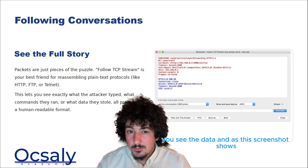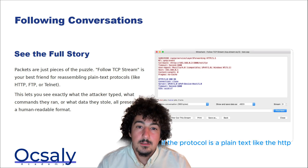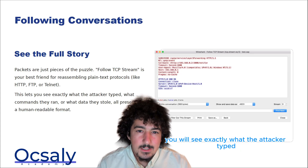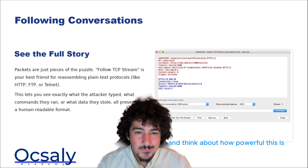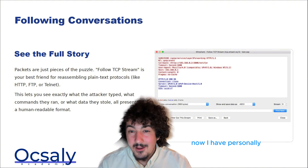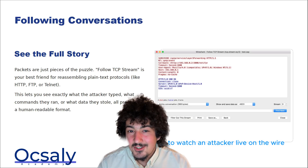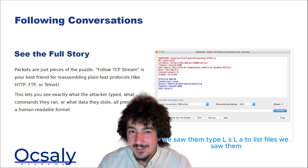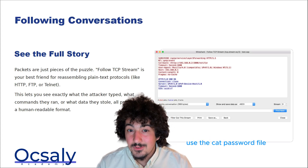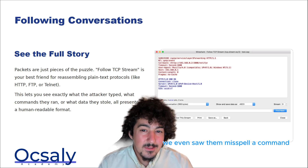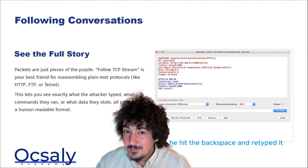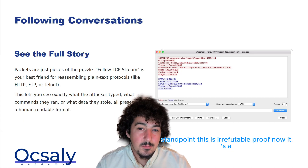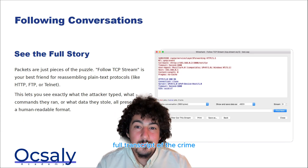As this screenshot shows, if the protocol is plain text — like HTTP, FTP, Telnet, or an old insecure command and control channel — you will see exactly what the attacker typed. I want you to pause and think about how powerful this is. I have personally used this feature in a real-world incident to watch an attacker live on the wire. We watched them log in. We saw them type 'ls -la' to list files. We saw them use 'cat' on the password file. We even saw them misspell a command, hit backspace, and retype it. And from a forensic standpoint, this is irrefutable proof — a full transcript of the crime.